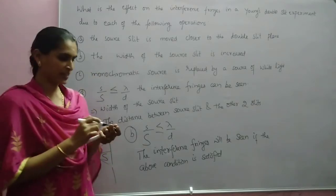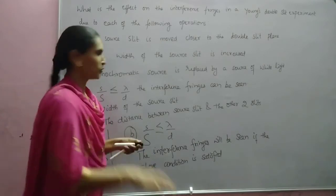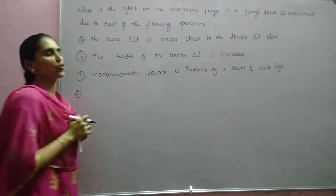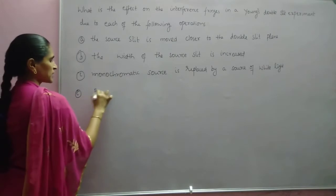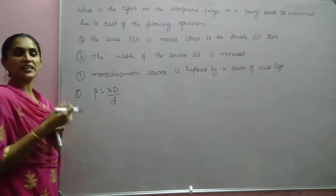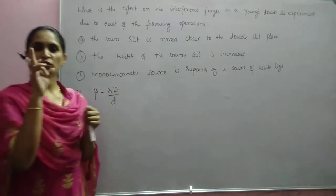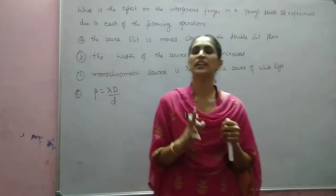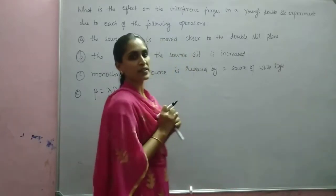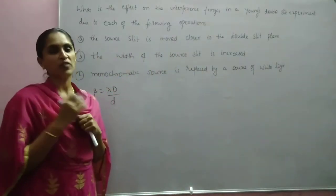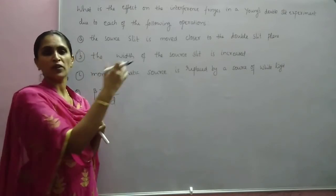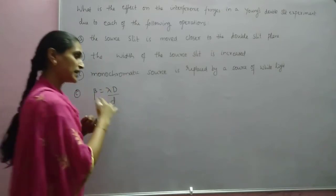For the third case, when the monochromatic source is replaced by a source of white light: we know fringe width beta equals lambda·D/d, which corresponds to a single wavelength. If it is replaced by white light — which contains multiple colors like yellow, green, blue — instead of a single color, we will see colored fringes.